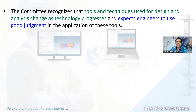What is written in the code is: the committee recognizes that the tools and techniques used for the design and analysis change as the technology progresses. The committee also recognizes that as advancements happen in technology, more and more accurate programs will be coming and people can use them — there is no problem with that. But what they are telling us is that it expects engineers to use good judgment in the application of these tools.